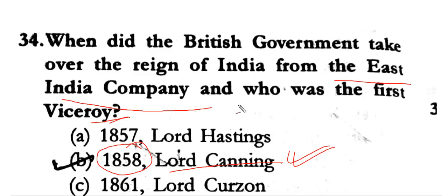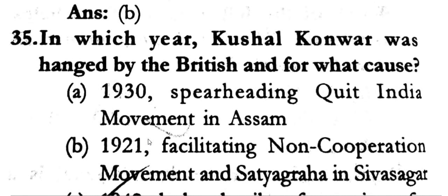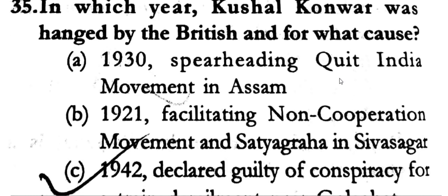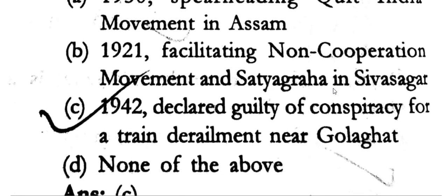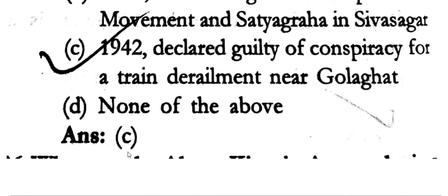Kushal Konwar was hanged by the British. He was declared guilty of conspiracy for a train derailment near Golaghat. The case of Kushal Konwar was declared guilty of conspiracy for the trained derailment near Golaghat.